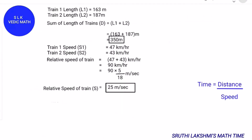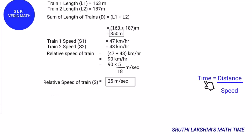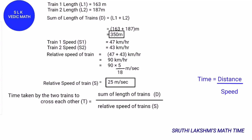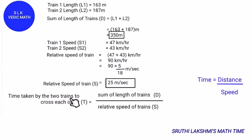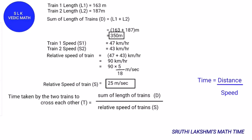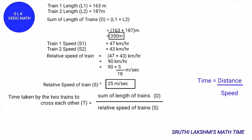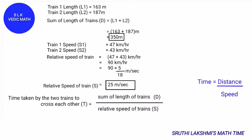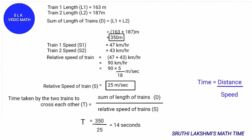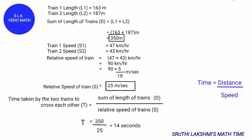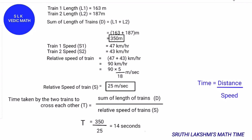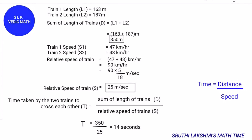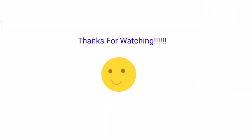Now we have to find the time. Time equals distance divided by speed. The sum of the lengths of the trains is 350m and the relative speed is 25 m/s. So the time is 350 divided by 25, which equals 14 seconds. It will take 14 seconds for the trains to cross each other completely. Thanks for watching!